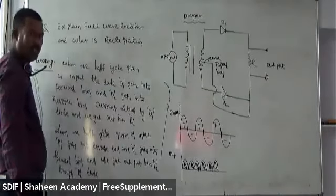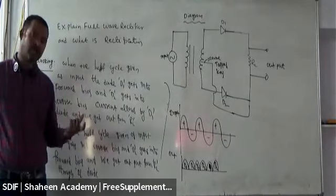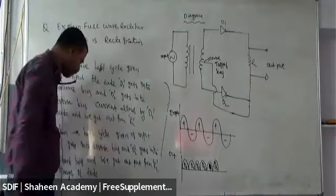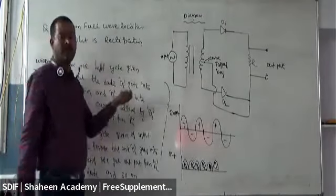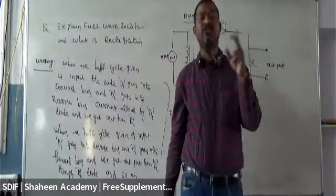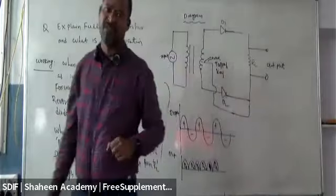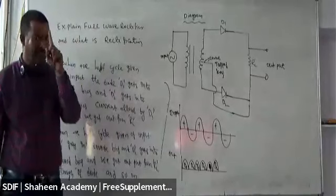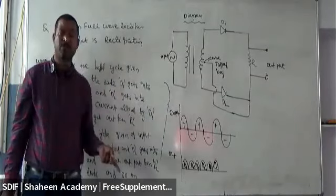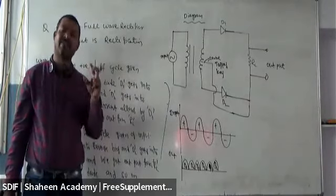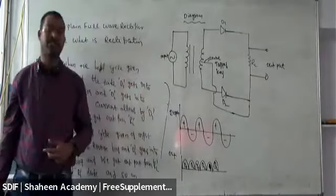When the positive cycle is entered, D1 allows and D2 does not allow. When the negative cycle is entered, D1 does not allow and D2 allows. This process is continuous — whenever positive enters, D1 converts it as output; whenever negative enters, D2 converts it as output. Every cycle, one diode is in forward bias, so we get output in every half cycle. Both positive and negative half cycles are converted into DC output.